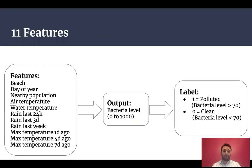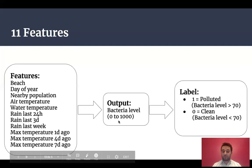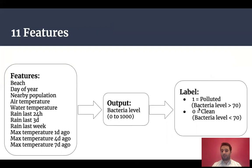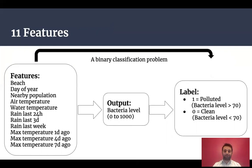For this project, I have 11 features: beach, day of year, nearby population, and other climatic features that might affect bacteria level in the beach waters. The outcome is the bacteria level, which can range from 0 to 1,000. Based on the bacteria level, I labeled each test either polluted or clean, turning the problem into a binary classification problem.